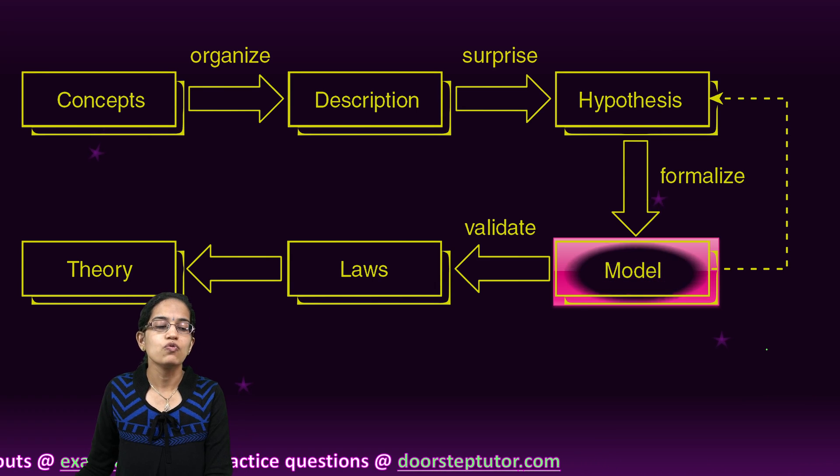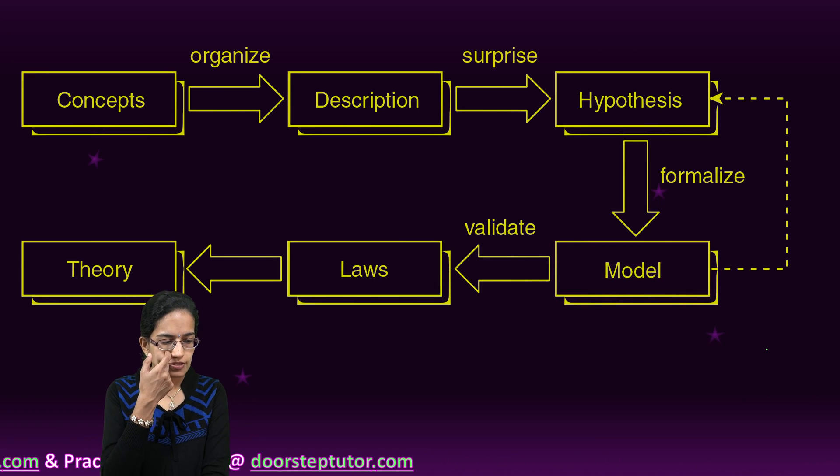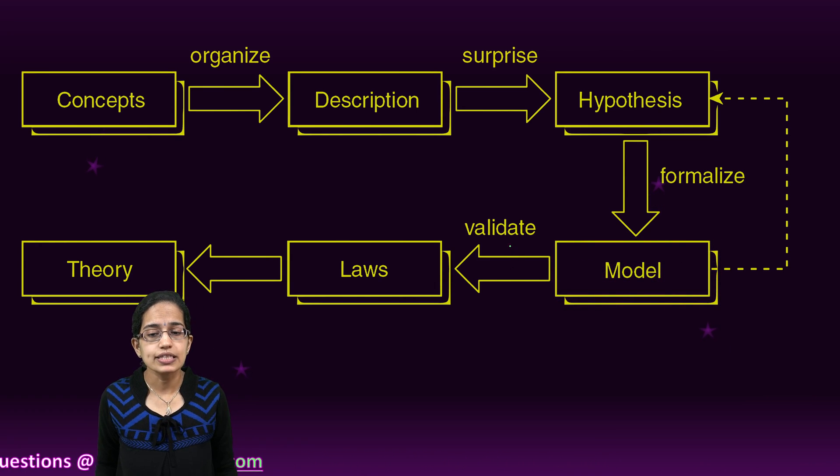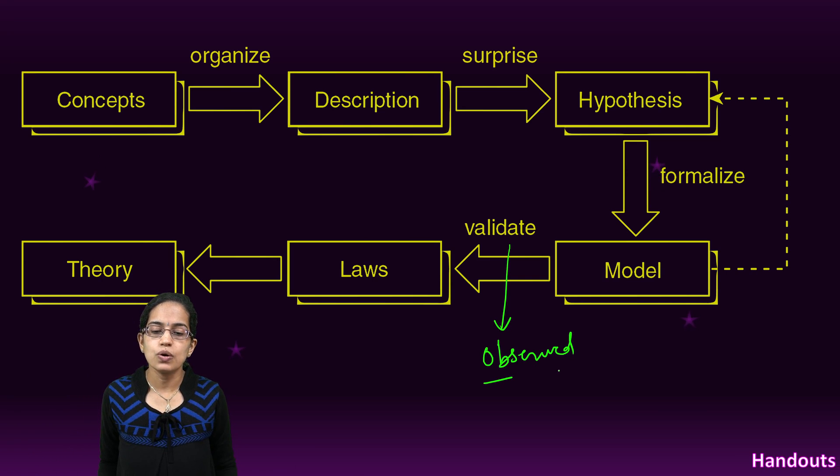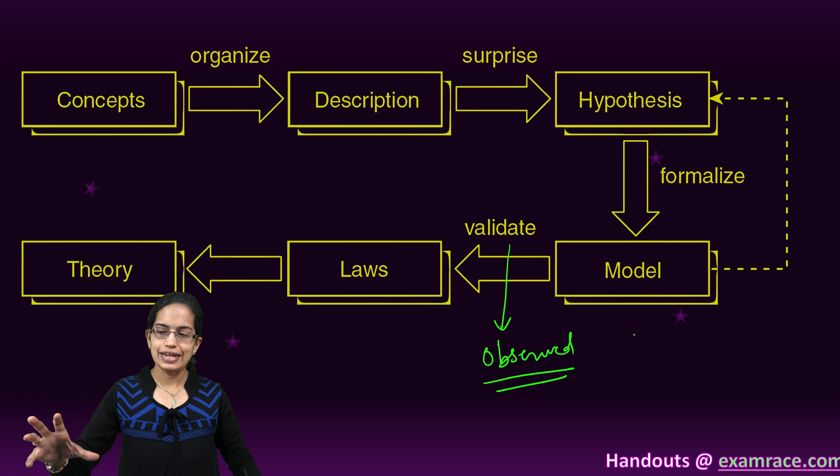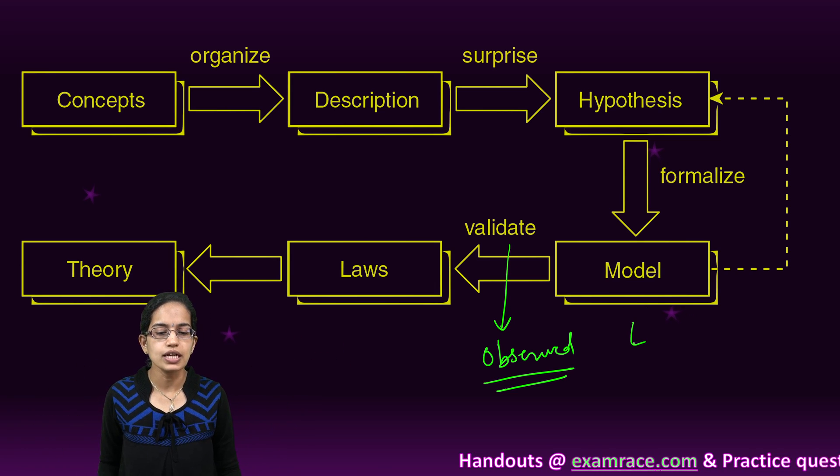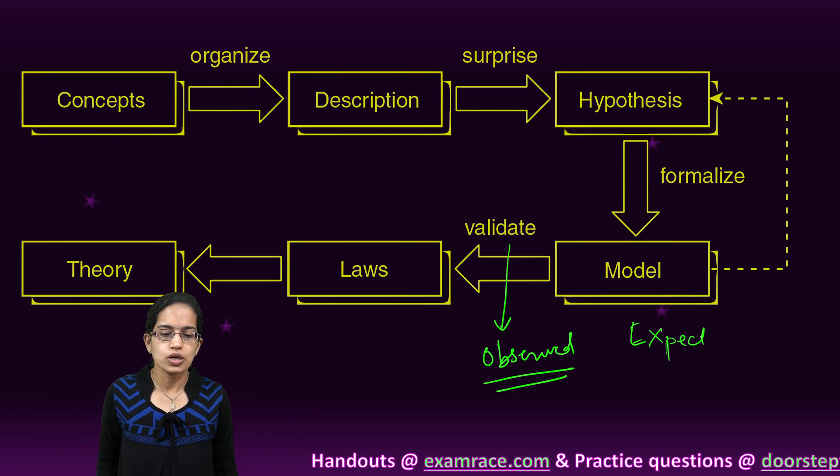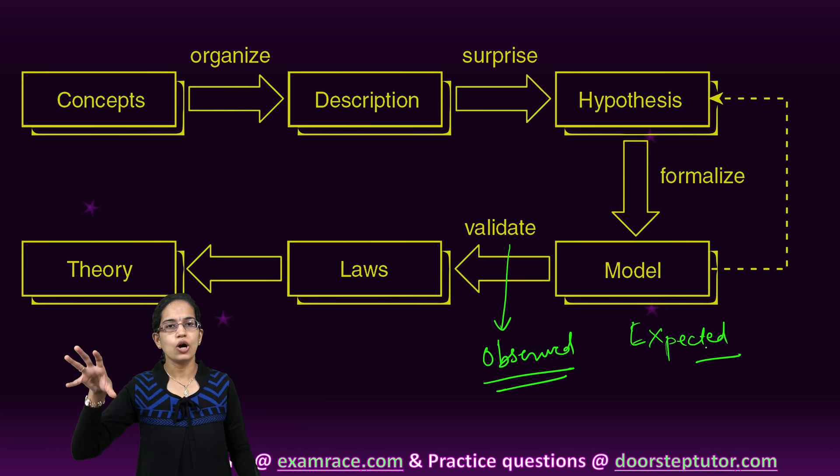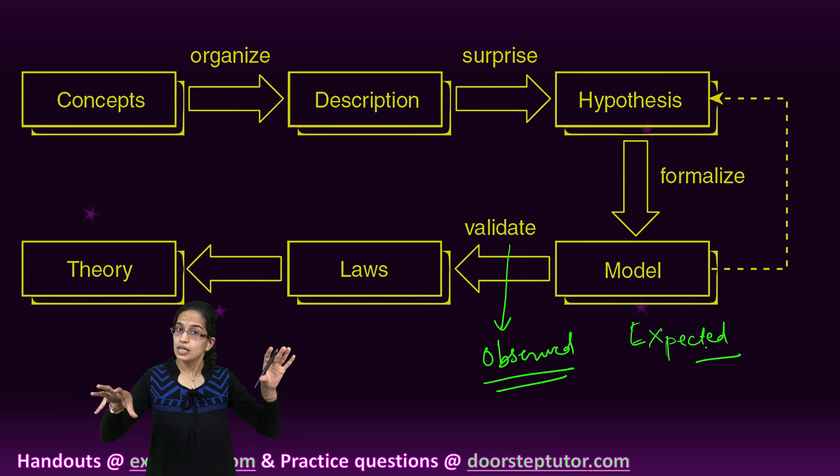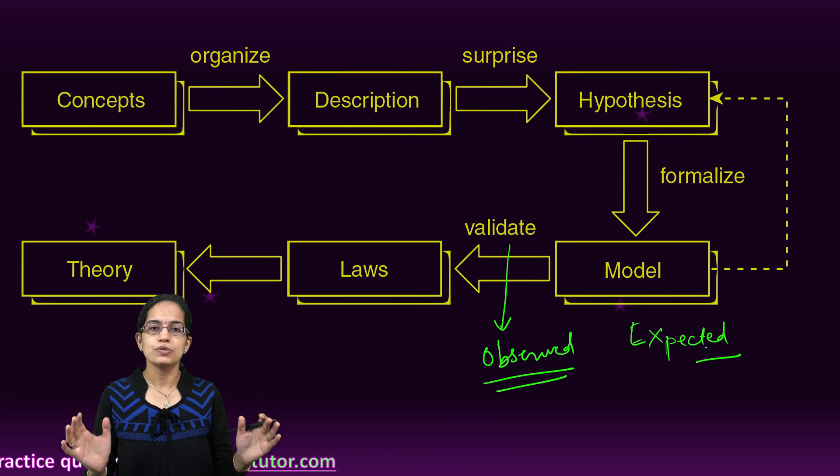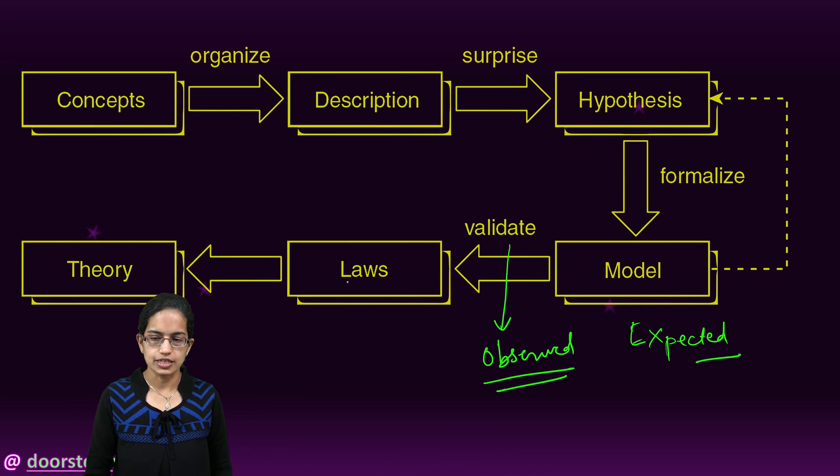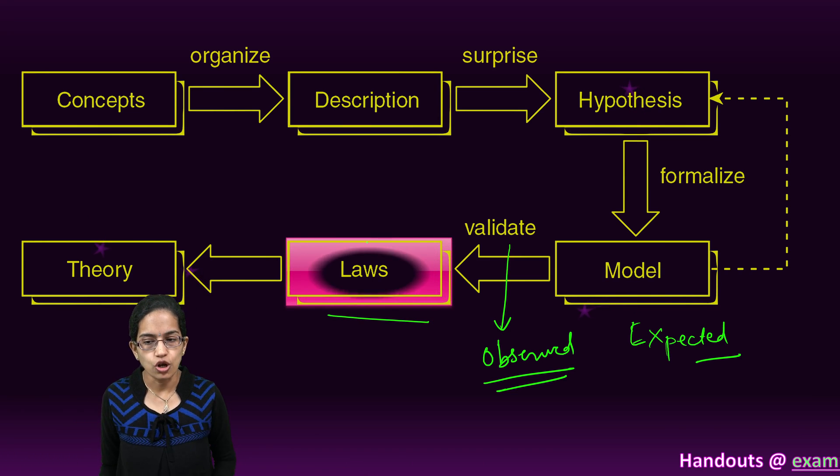What is validation? Validation is simply I have certain observed data and I'm trying to understand or relate that observed data with the expected phenomena. Creating a relation between the observed phenomena versus the expected phenomena is what is validation. So what I do is I validate my findings. Once I have validated those findings, I create the laws.